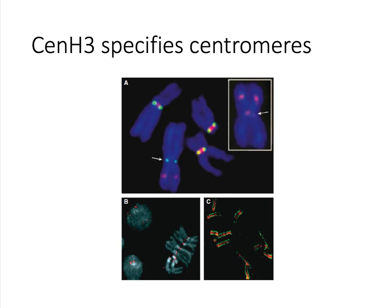CenH3 is another H3 variant that is very common — up until recently, I would have said universal. CenH3 replaces regular H3 at the centromere, and it actually specifies where the centromere forms. This is illustrated in the figure above. In panel B, we can see that the centromere in each of these Drosophila chromosomes is marked in red by an antibody to CenH3. The nematode C. elegans has holocentric chromosomes, meaning that its centromere is spread out along the entire length of the chromosome, and so the antibody against CenH3 in green stains along the entire length of the chromosome.